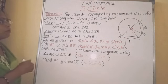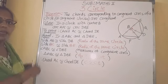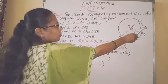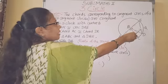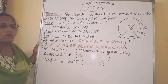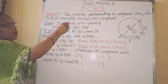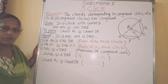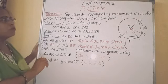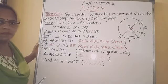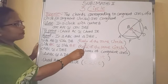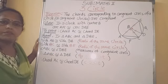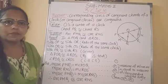This way we proved: if in a circle or in congruent circles, the arcs are congruent, then the chords related to those arcs are also congruent — the chords corresponding to congruent arcs are congruent. You can try to prove this for congruent circles; the theorem remains the same.